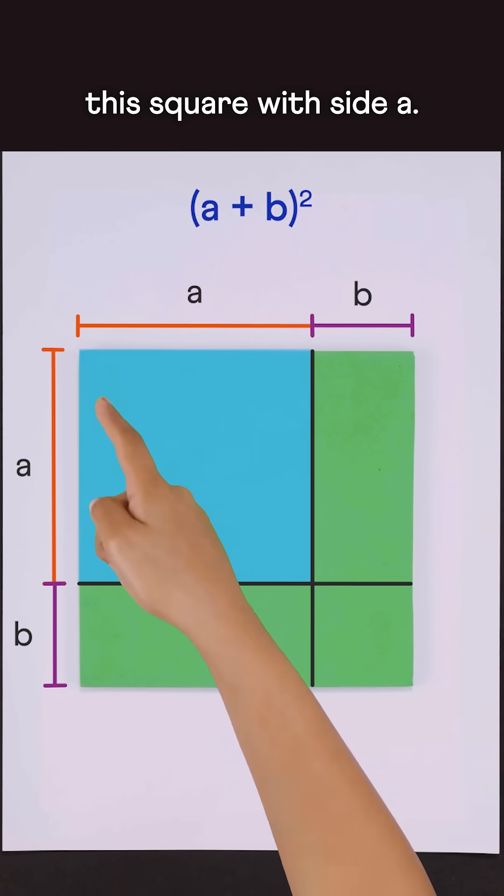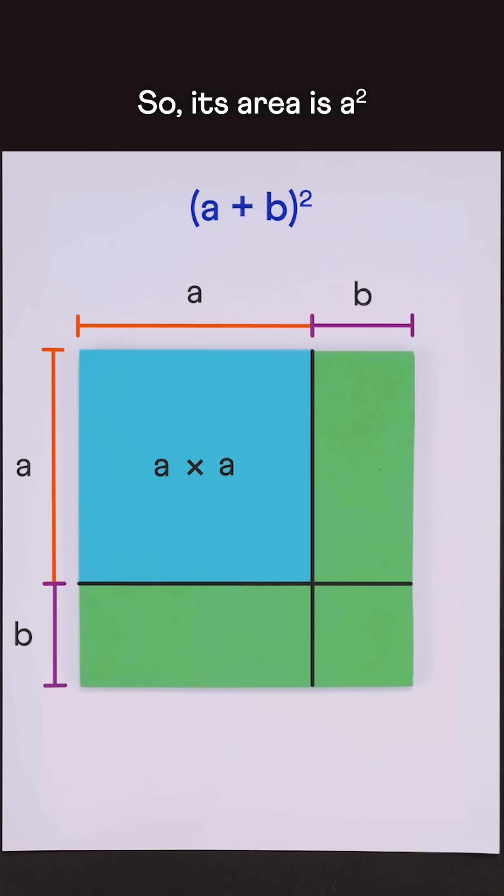We get this square with side A, so its area is A squared. And this smaller square with side B, so its area is B squared.